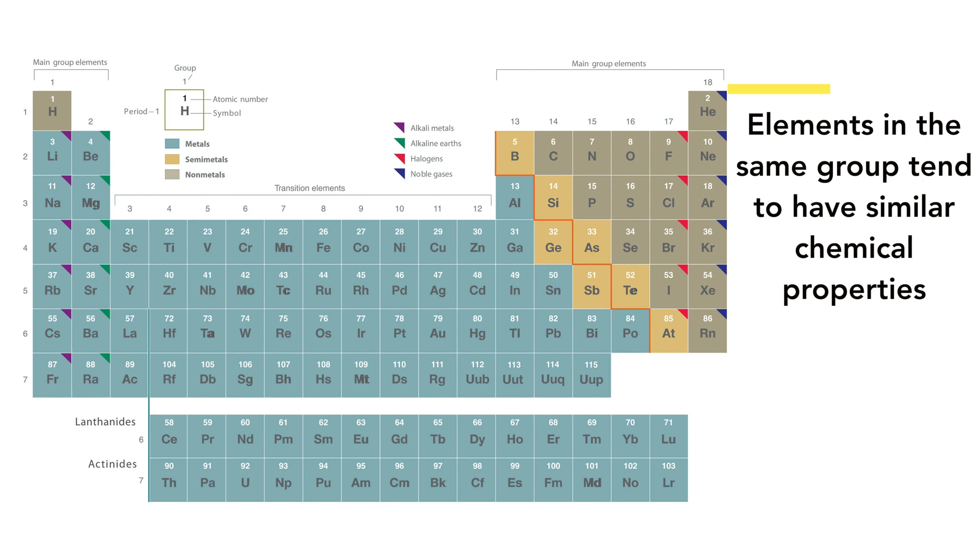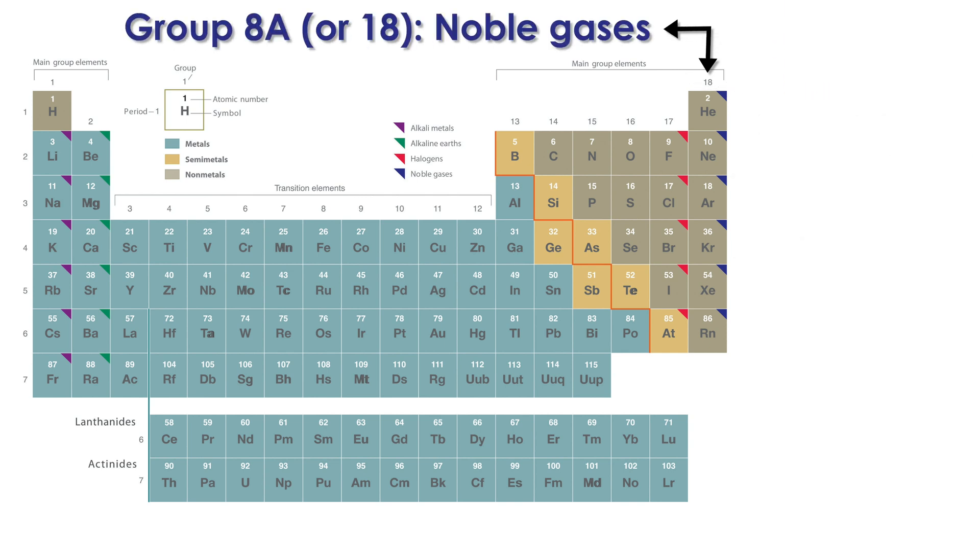An important observation about groups is that the elements in the same group tend to have similar chemical properties. For example, group 18 or 8A is known as the noble gases, and all of the elements in this group are inert, meaning they don't usually react with other elements.